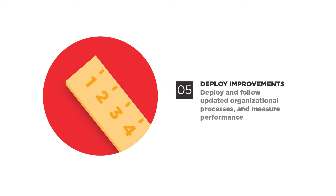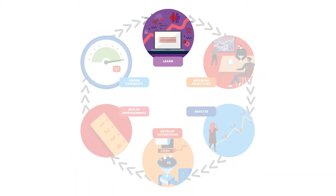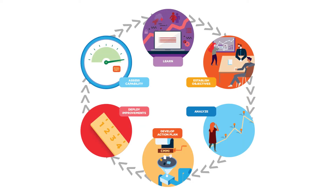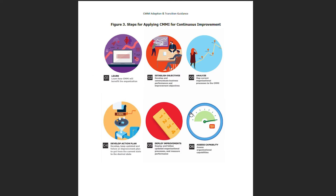Step five: Deploy Improvements. As the improvement plan is being implemented, the organization deploys and follows the updated organizational processes, and most importantly, measures the resulting performance. Step six: Assess Capability. The last step is to assess the capability and performance of the organization. The information in each of these six steps is presented in a layered fashion to meet the different information needs of key stakeholders in an improvement program. Page 12, figure three of the CMMI Adoption and Transition Guidance contains a graphic of each step, its title, and description.